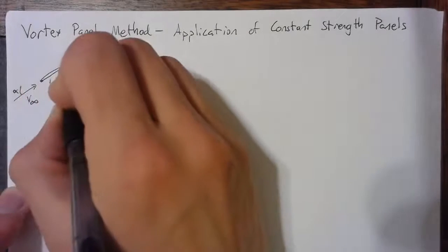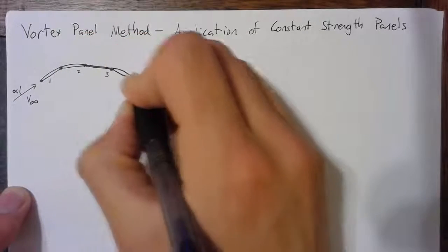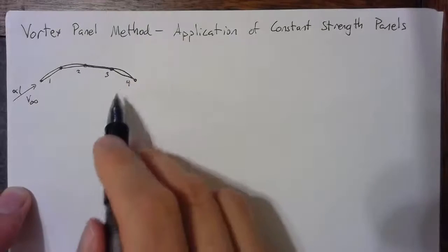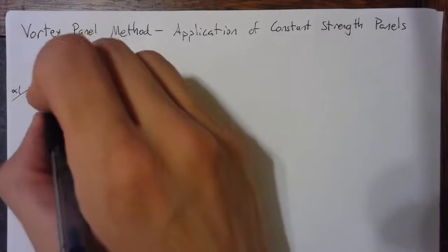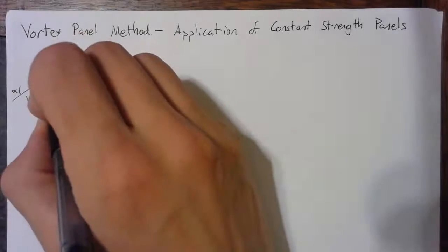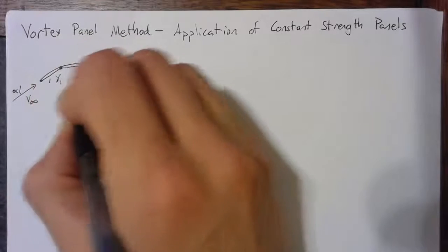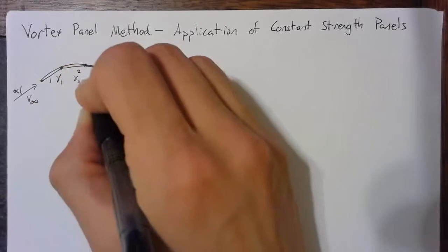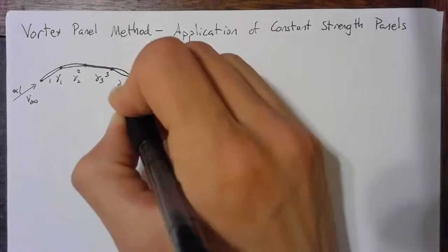We'll call these panels one through four, and each of these will have a constant gamma associated with them. So this panel will have gamma one, gamma two, gamma three, and gamma four.